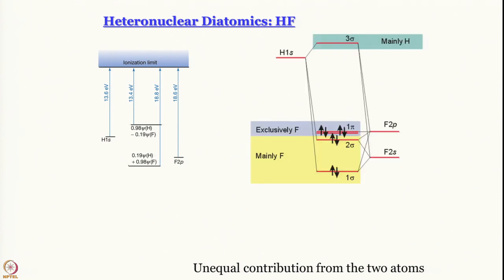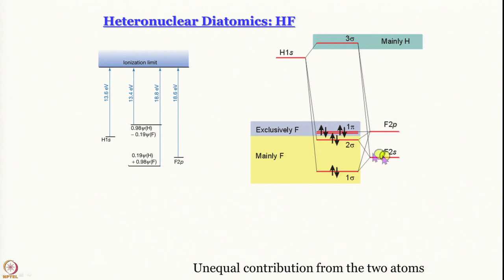Now let me show you the full energy diagram as constructed from molecular orbital theory. These relative energies are more or less drawn to scale. This is the orbital which has energy close to that of the hydrogen atom — it is mainly like the hydrogen 1s orbital. A key point is that the energy of fluorine orbitals is much much lower than the energy of hydrogen, as we discussed when we talked about homonuclear diatomic molecules of the second row.